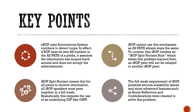With iBGP the AS number is always going to stay the same, so as a prefix is passed from router to router, the AS number will never change. You can't use that as a mechanism to detect loops. To counter this, iBGP has a spin on the split horizon rule — which you'd know from EIGRP — stating that if you receive an advertisement from an iBGP peer, you will not pass it on to another iBGP peer.